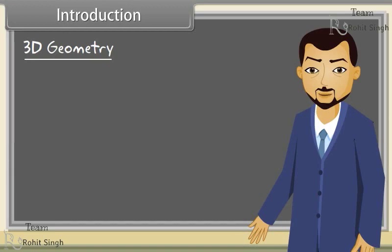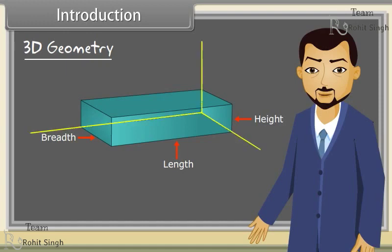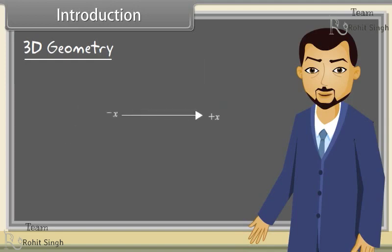Real-world objects exist in three dimensions. For example, a cuboid or a box is completely described by three parameters: length, breadth, and height. Corresponding to that, each point in the Cartesian space has three coordinates: x, y, and z. Look at this figure carefully. The x-axis is along the length of the screen, the y-axis is along the height of the screen, and the z-axis is the one coming out of the computer screen.